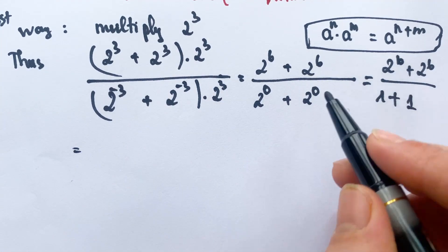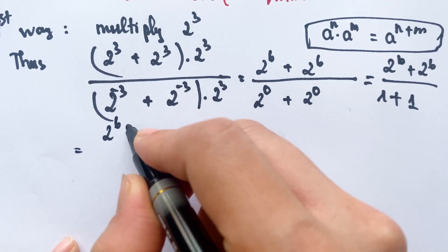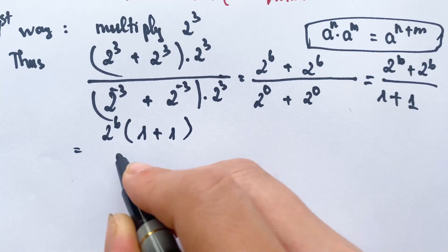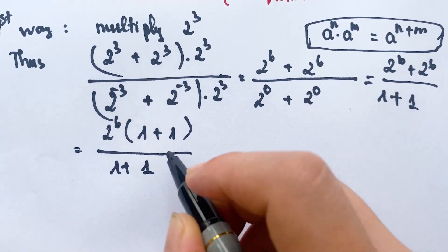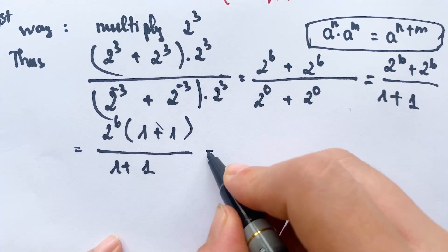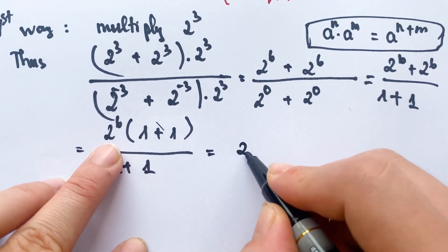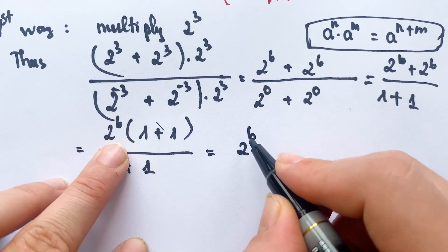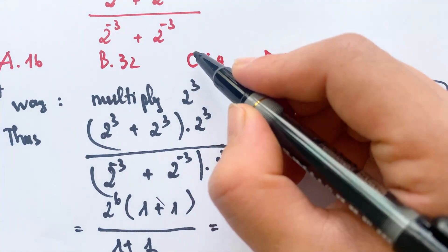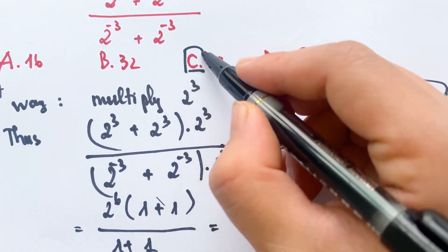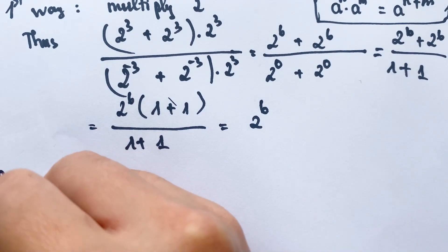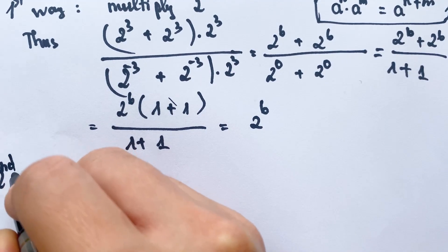So we have two to the power six plus two to the power six over one plus one. Factoring out two to the power six, we get two to the power six times (one plus one) over (one plus one). The (one plus one) terms cancel in numerator and denominator, giving us the answer two to the power six. So you need to choose answer C.